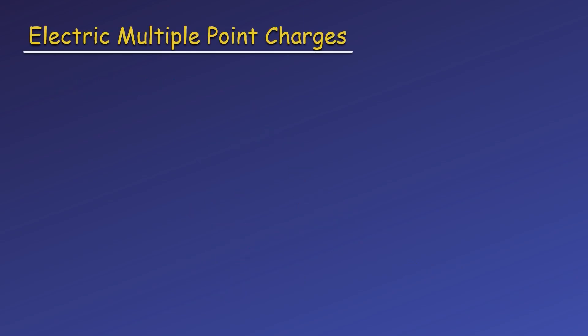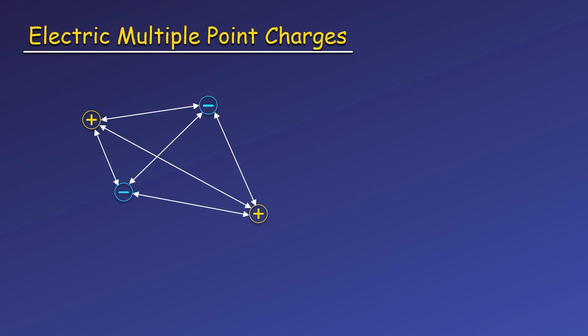Now let's look at multiple point charges. We can think of the potential energy as the amount of energy or work required to bring each charge from very far away — or infinitely far away, where it cannot interact — to its current position. The first charge has no other charges to interact with, so it doesn't require any work or have any potential energy by itself. To bring a second charge to a certain location will require work. At this point, the energy of the system of two charges is given by the potential energy of two point charges that we've just found. But when we bring in a third charge, it will be interacting with both of the existing charges. Every subsequent charge will require an amount of energy that depends on all of the existing charges. This means the total potential energy of the system is obtained by finding the potential energy of each pair of point charges and then adding them up.